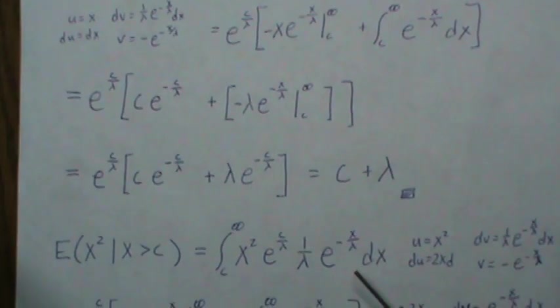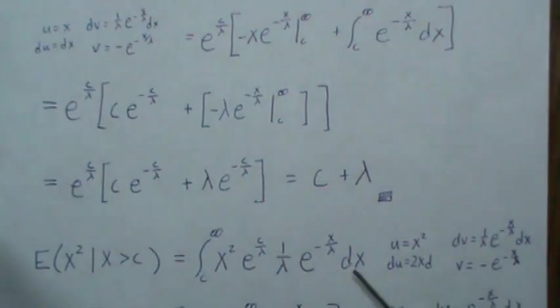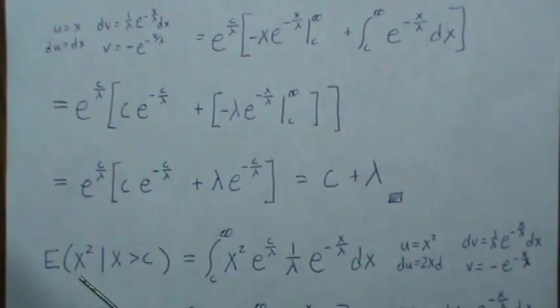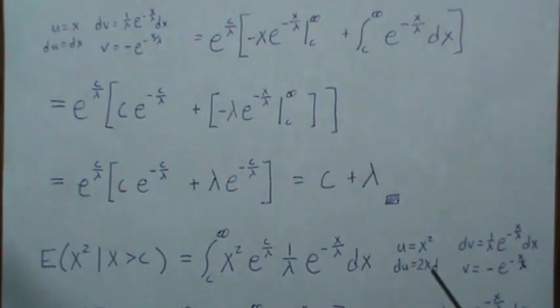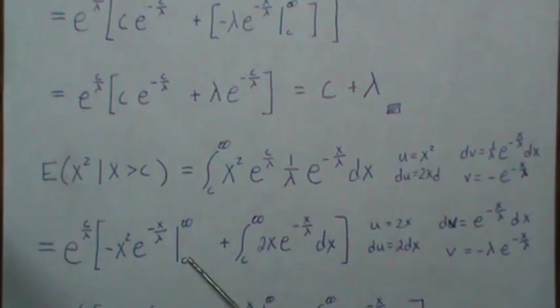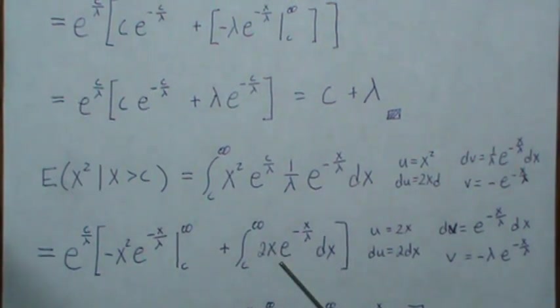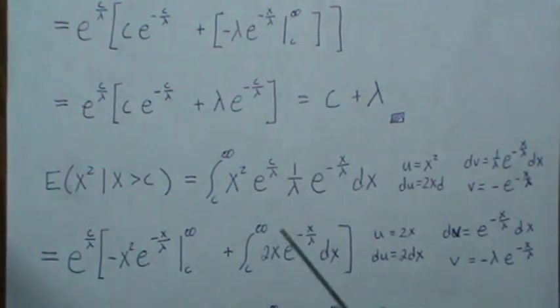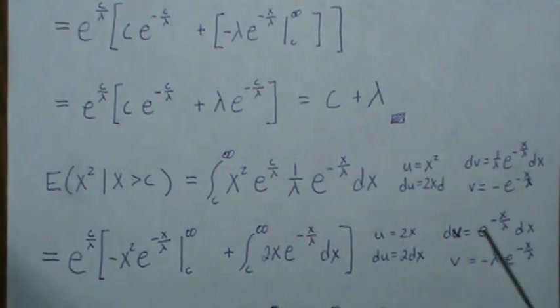Now the second moment using the definition is we plug in X squared and there's our density and we're going to use integration by parts twice so here's our substitution and we get this. Now we integrate this by parts again using this substitution.